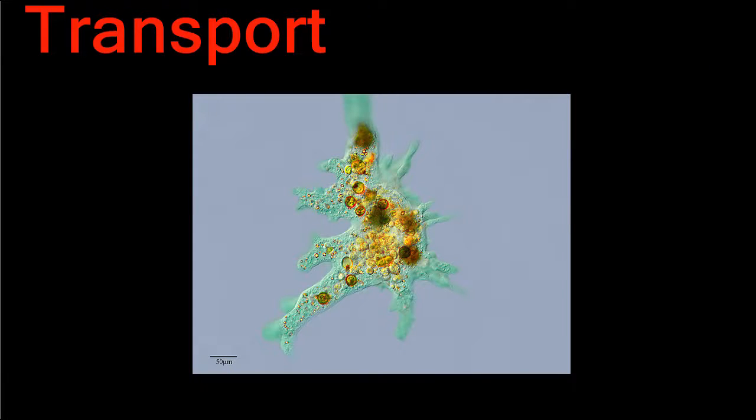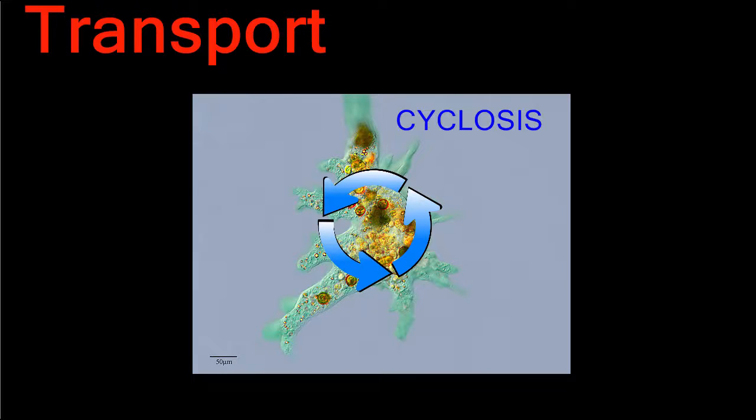Even unicellular organisms need to perform the act of transport. They use diffusion and osmosis to move material into and out of the cell. Materials circulate throughout the cell by a process known as cyclosis, where the cytoplasm flows around the cell.